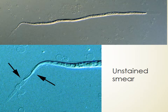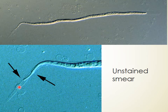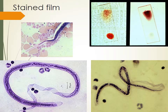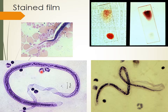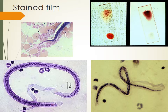In the unstained preparation, you can see the sheath of the microfilaria and various cells around it. In thick and thin smear, microfilaria can be clearly identified — it is quite large. In the thick smear, RBCs are not seen, but microfilaria is visible. You can identify the sheath of the microfilaria, the nuclei running along the body, the tail portion, and the cephalic space.